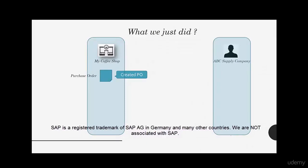Let's recap what we have just done. We wanted some flour for our coffee shop, so we went into SAP and used the SAP GUI to create a purchase order. Just like when you create an order on Amazon and see the order number instantly, it's the same here. But now we have to get this purchase order over to the vendor.